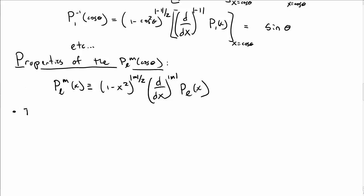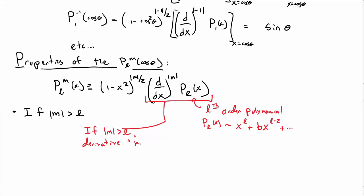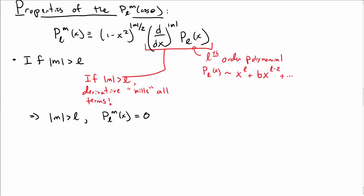Okay, so first off, let's imagine we take M, or the absolute value of M, greater than L. Remember that the Legendre polynomials are Lth order polynomials. So what that means is P_L(x) goes something like x^L plus some coefficient times x^(L-2) plus et cetera, going down by numerical values of 2 each time. So that means if you take d/dx of the Lth order polynomial when M is greater than L, then the derivative will kill all of the terms in the Legendre polynomial. Which means that if |M| is greater than L, then the associated Legendre functions are 0.